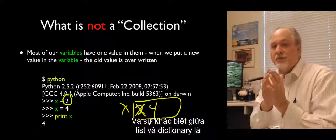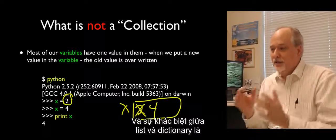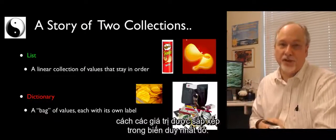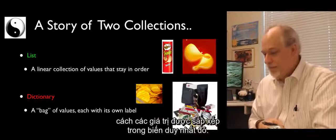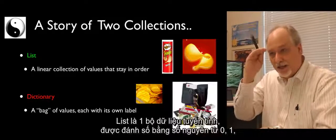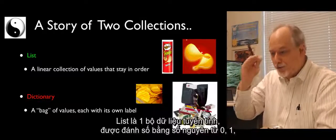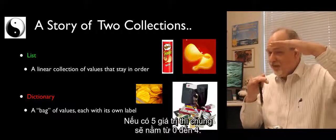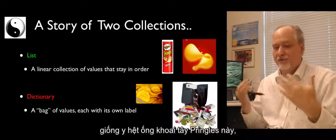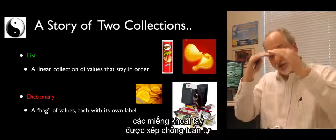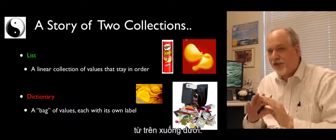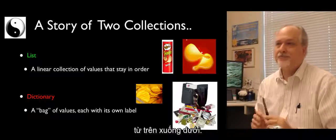A dictionary allows us to have a variable that's really an aggregate of many values. The difference between a list and a dictionary is how the values are structured within that single variable. A list is a linear collection indexed by integers 0, 1, 2, 3. If there are five of them, it's 0 through 4 — very much like a Pringles can, where they're just stacked nicely on top of each other.